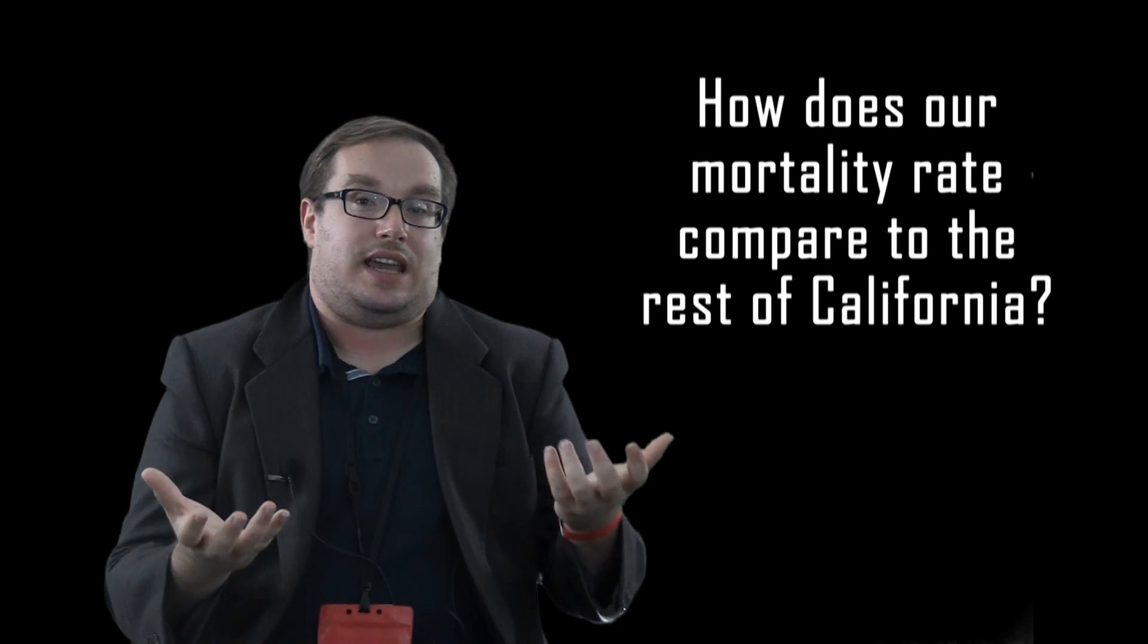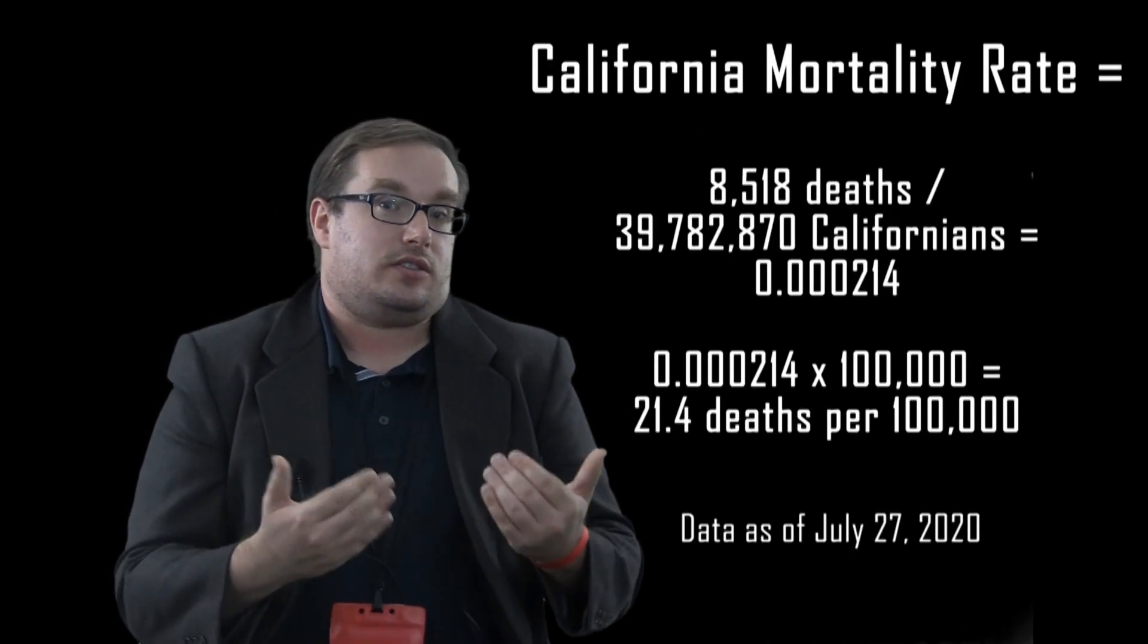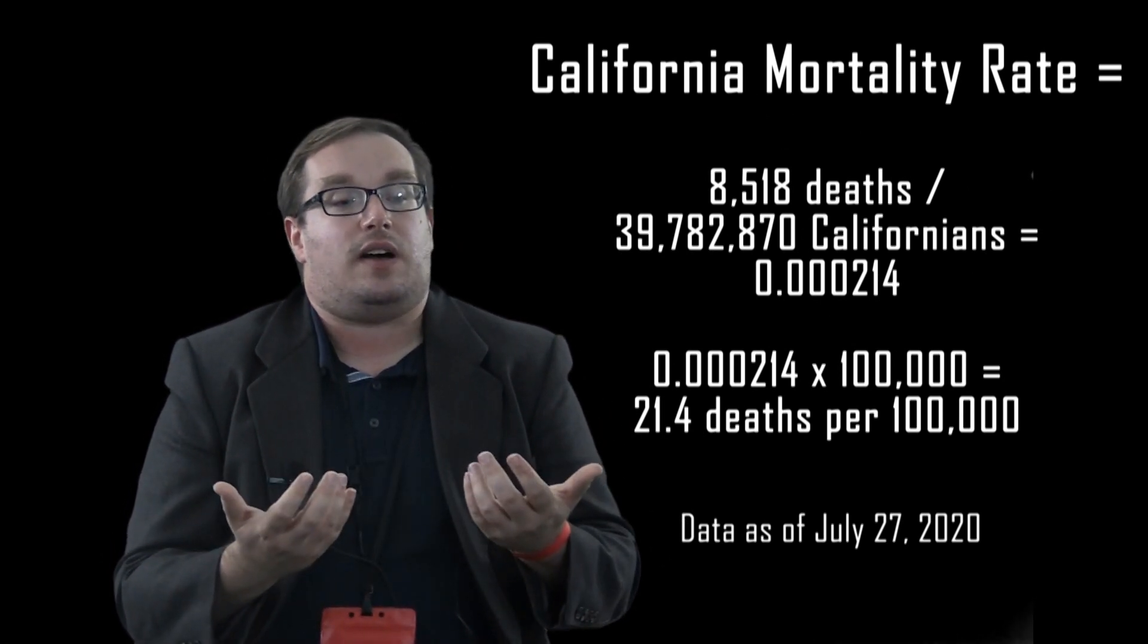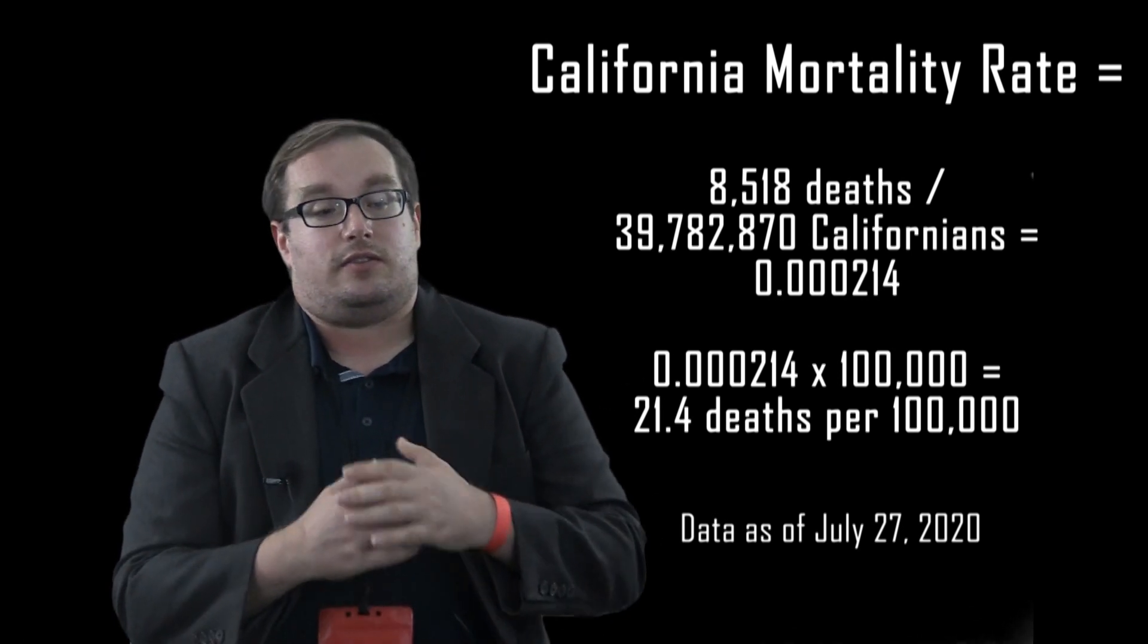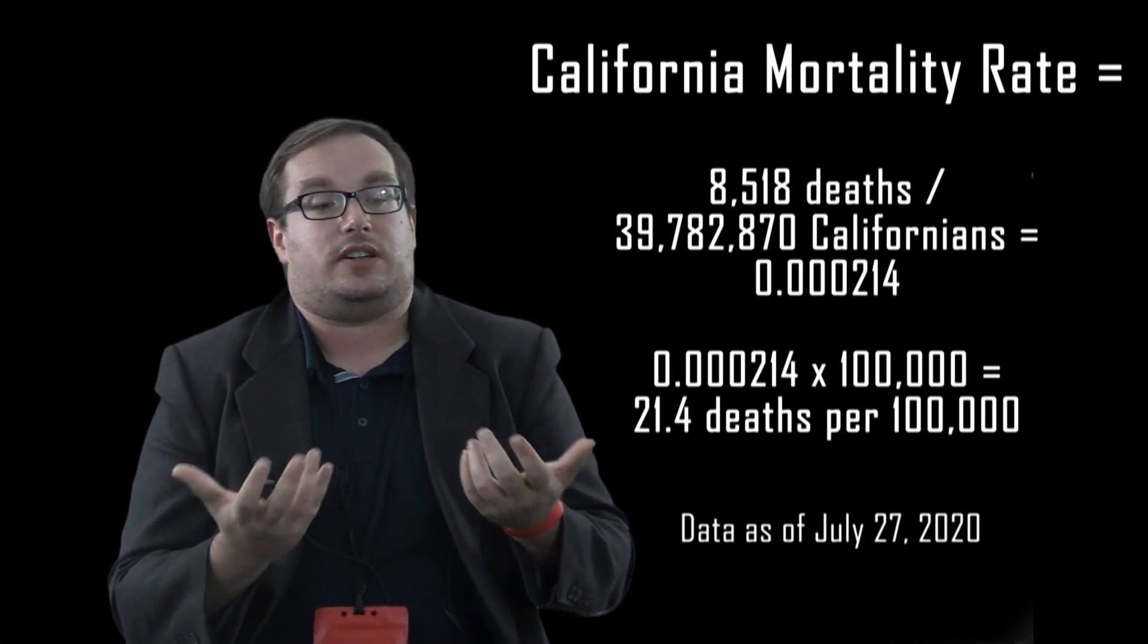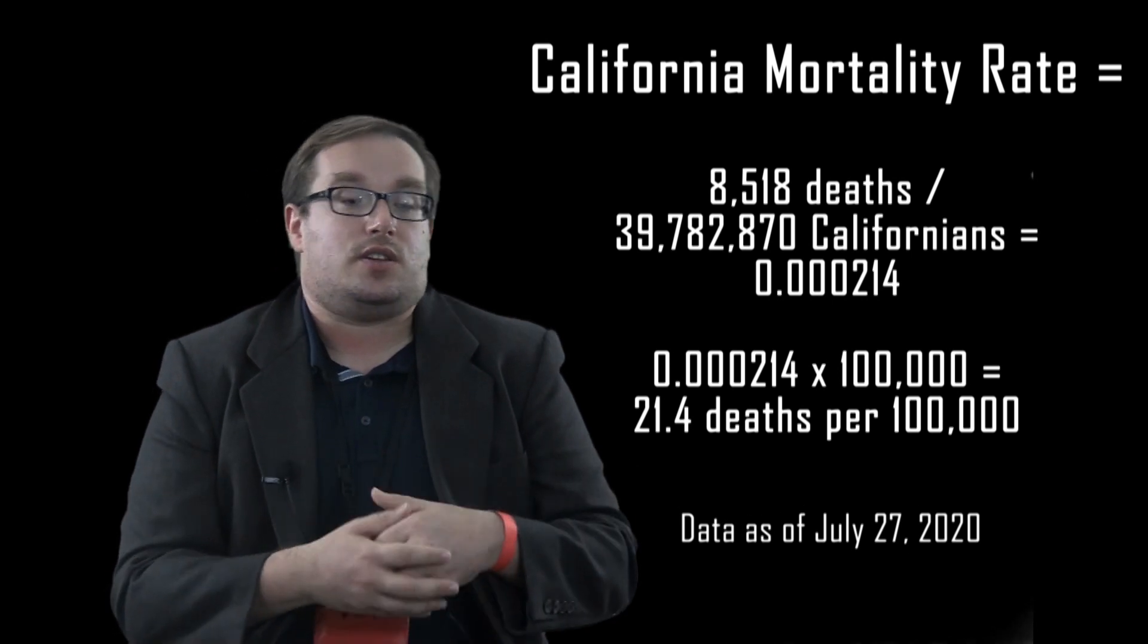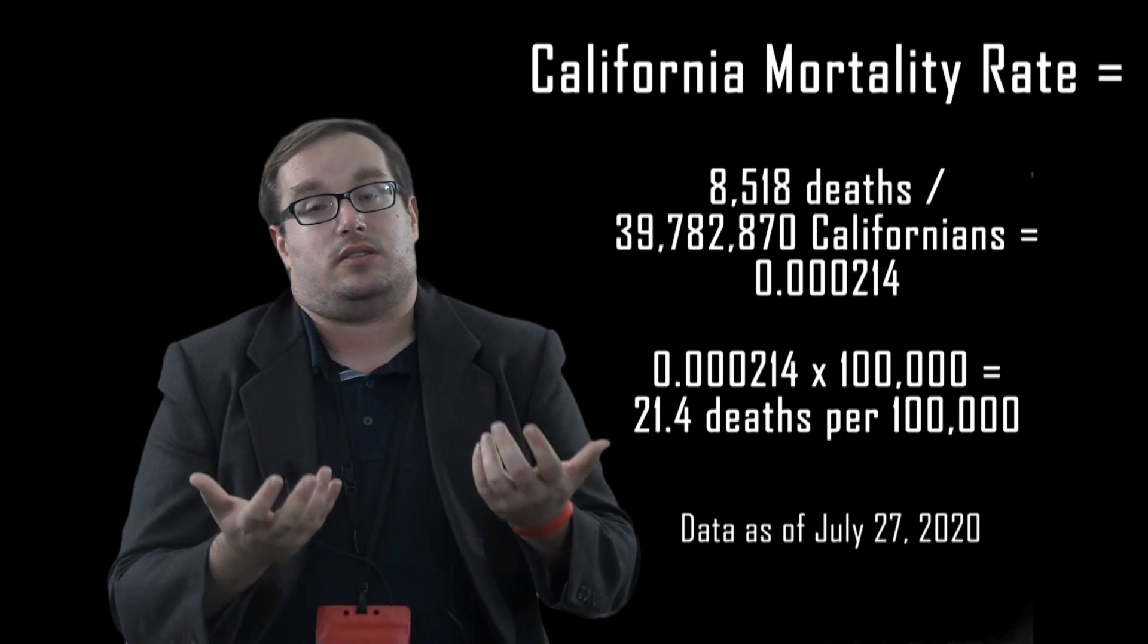How do we compare to the state? And this is really where we use mortality rates. Statewide, as of yesterday—we checked the dashboard, state's dashboard today—there have been 8,518 people who've died of coronavirus in the state of California, and from the Department of Finance, there's about 39 million 782 thousand 870 people in California. So when we do that math, we get roughly 21.4 people per hundred thousand die.